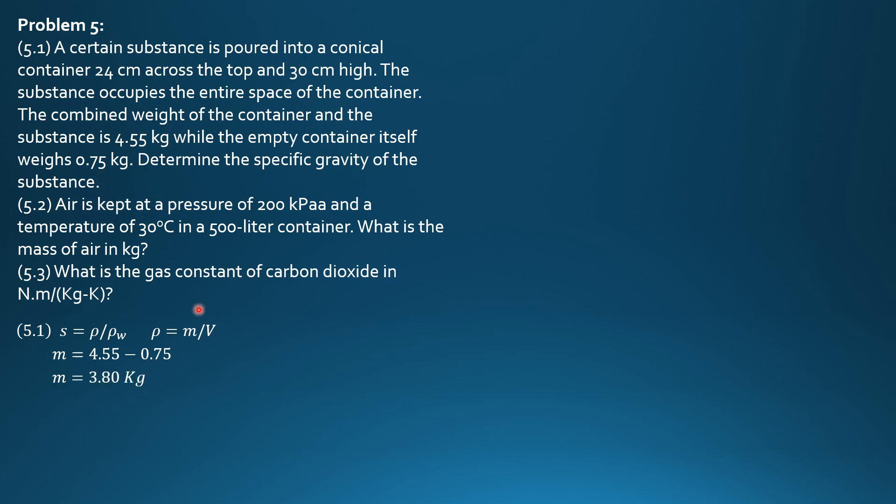The volume of the container, volume of cone is π radius 0.12 m² height 0.3 m divided by 3. So density of substance is 3.8 divided by π 0.12 m quantity squared times 0.3 over 3. In kg per cubic meter, the density of substance is 840 kg per cubic meter.